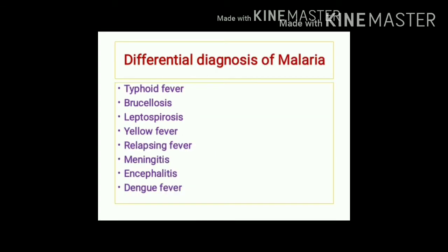Differential diagnosis of malaria includes typhoid fever (bacterial intestinal infection), brucellosis and leptospirosis (bacterial zoonotic infections), yellow fever (viral zoonotic infection), relapsing fever (louse-borne infection), meningitis or encephalitis of varied etiology, and dengue fever (another arthropod-borne infection).